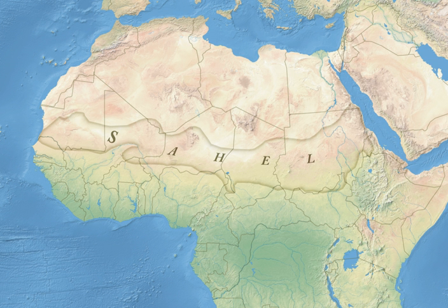Terrorist organizations including Boko Haram and Al-Qaeda in the Islamic Maghreb operating in the Sahel have contributed to the violence, extremism and instability of the region. The violent herder-farmer conflicts in Nigeria, Mali, Sudan and other countries in the Sahel region have been exacerbated by climate change, land degradation, and population growth. Droughts and food shortages have also been linked to the northern Mali conflict.